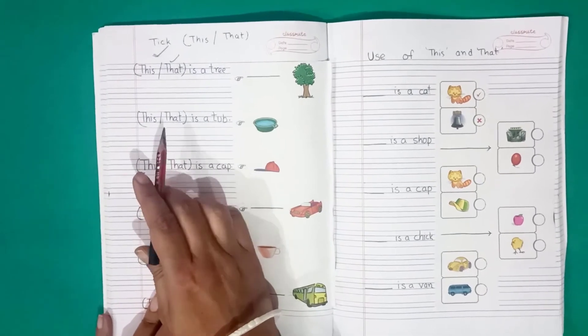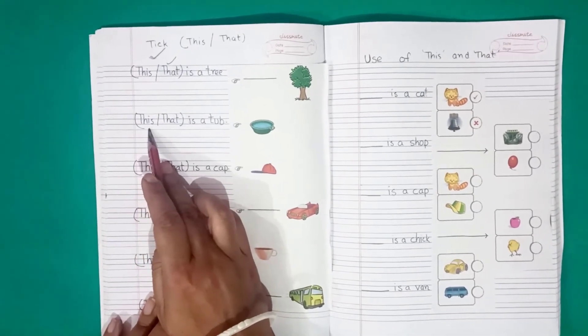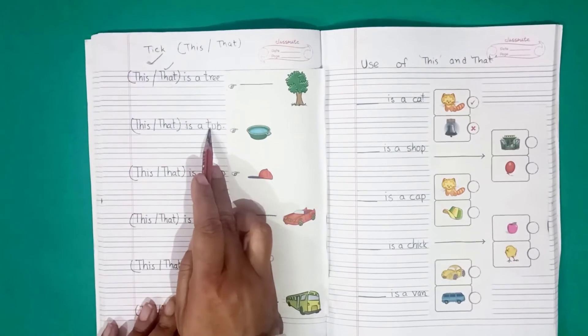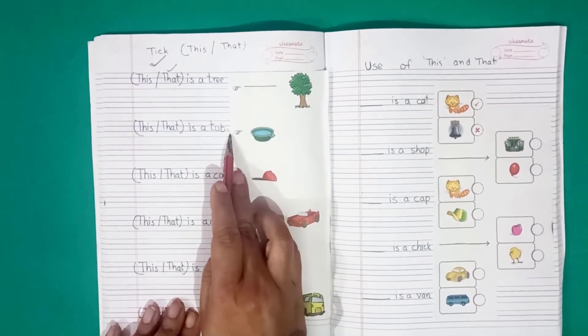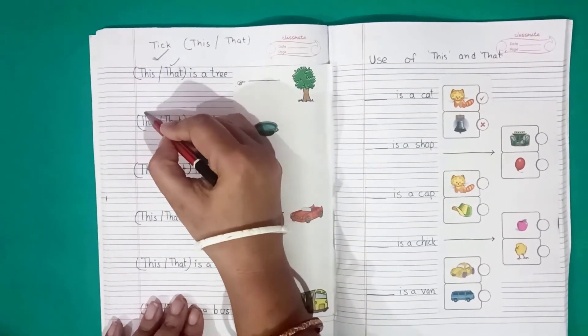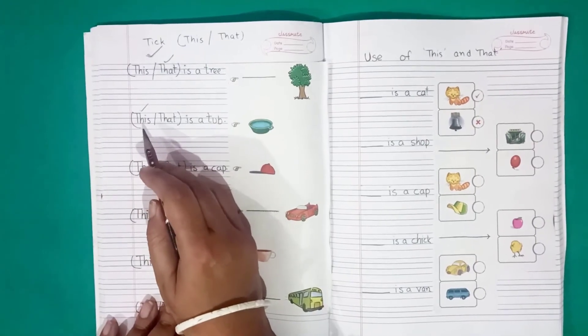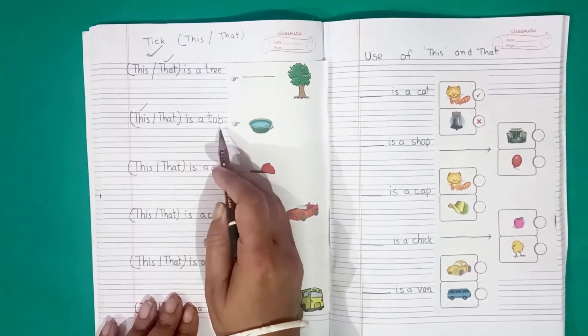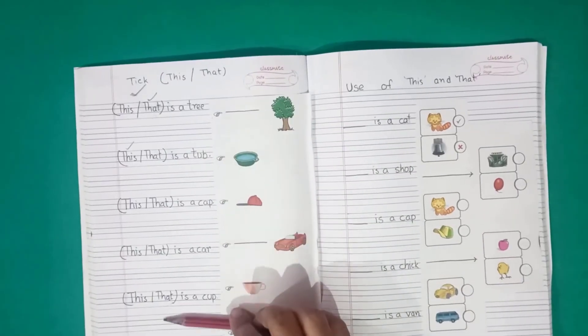One more example I am showing you. See, this or that is a tub. Tub is near. So, we will take the this. This is a tub. You can do the worksheet.